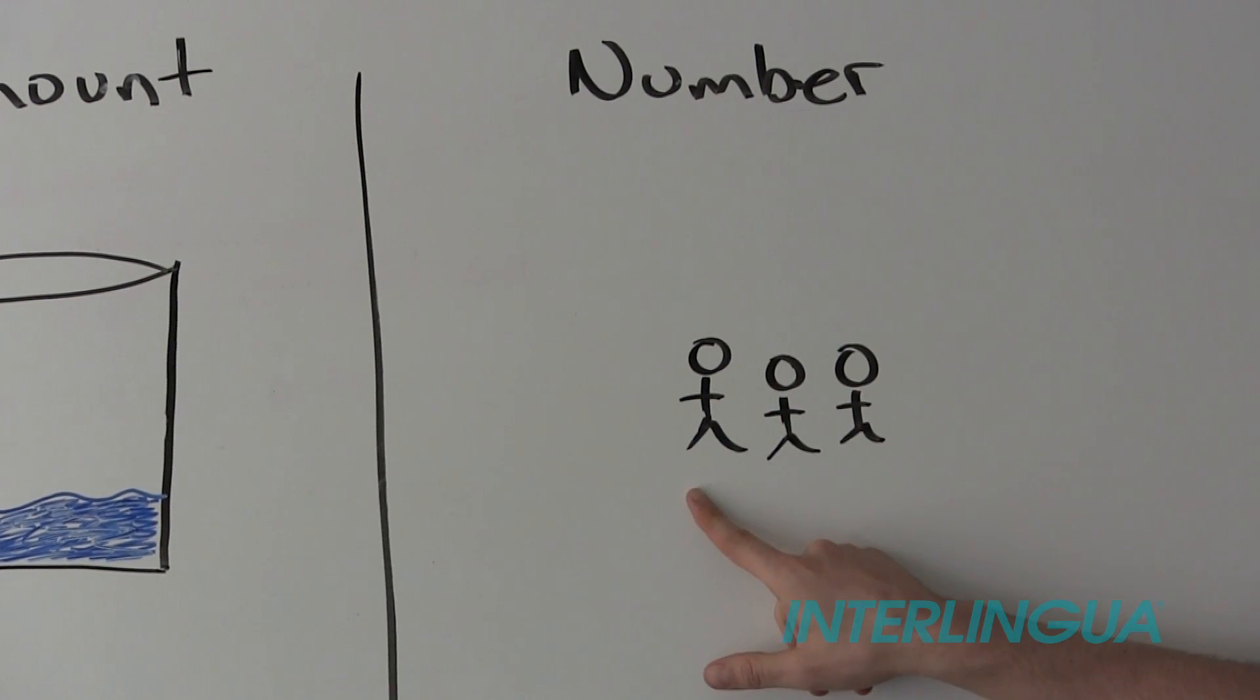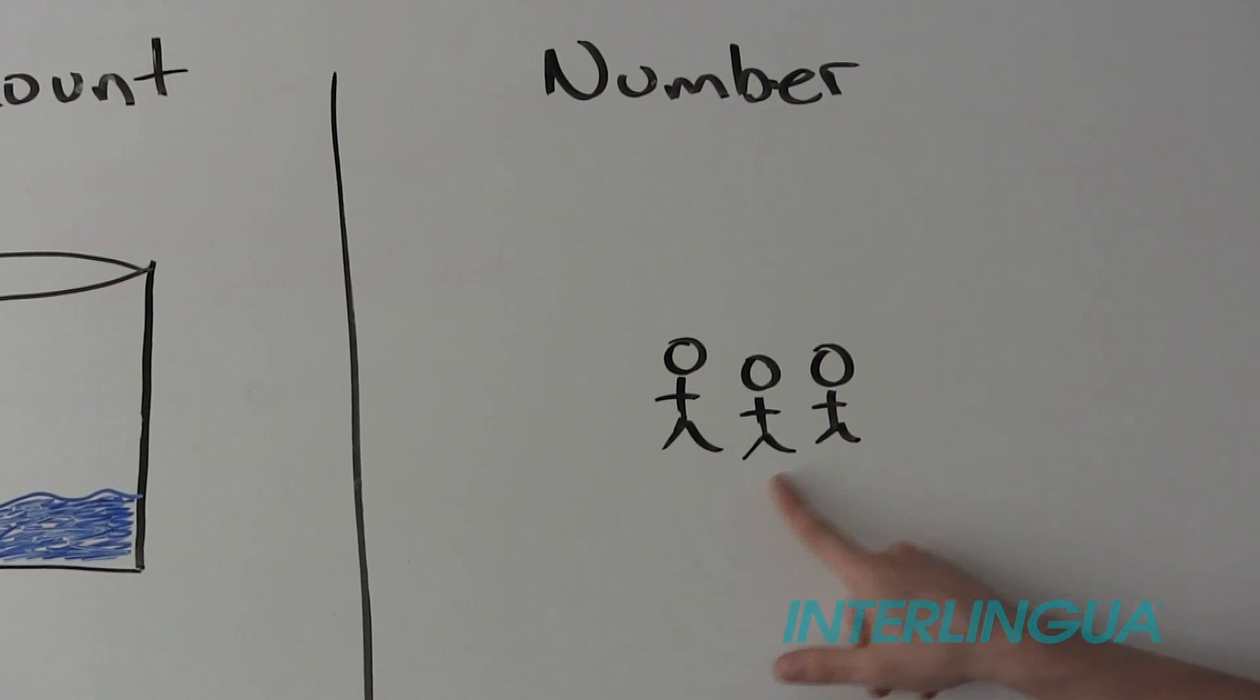Because we use number when we can count. One, two, three.